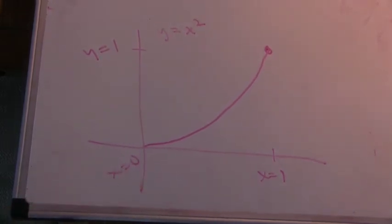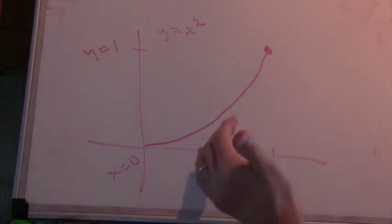All right, so here's my simple picture of y equals x squared from x equals 0 to x equals 1. Just made it a little bit bigger than we had the last time, and we're trying to find the area under the curve here.